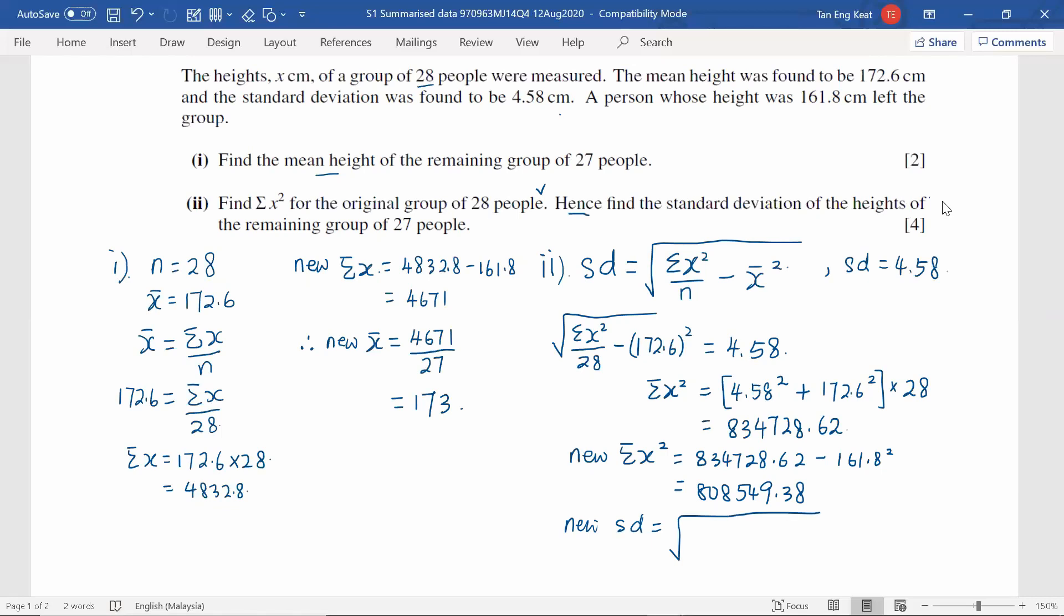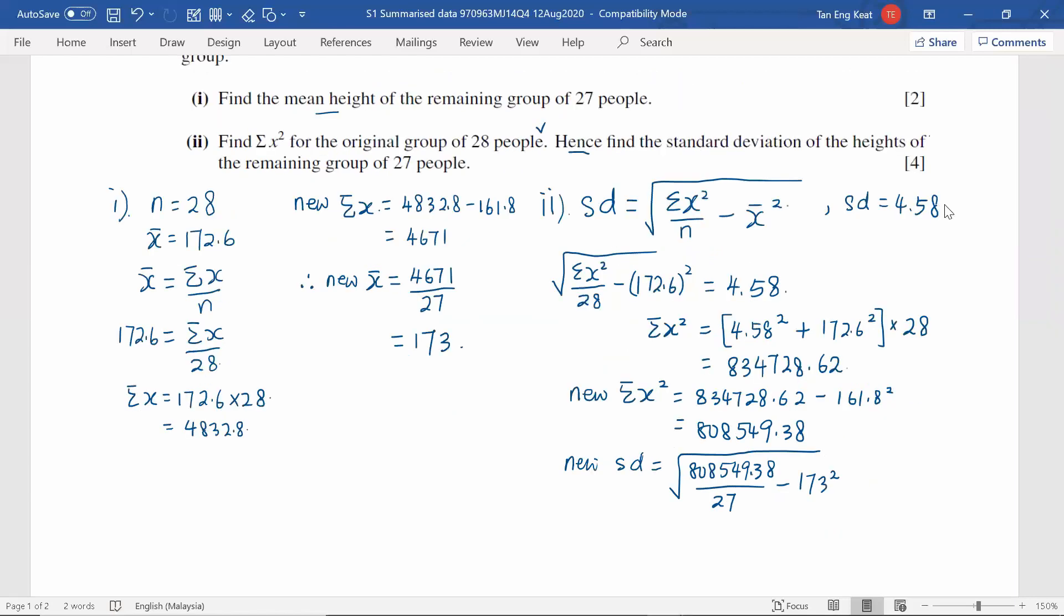So the new sigma X squared, then divided by remaining 27 people and minus of the mean of the 27 people, which is the answer found in part 1, 173 and squared. Using calculator and the answer is going to be 4.16 round off to 3 significant figures. So we found the answer for part 2, the new standard deviation of 27 people.